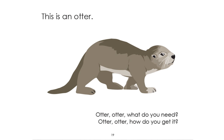This is an otter. What does the otter need to live and grow and how does it get it? Students respond: it needs air, the otter needs food. Let's go on to the next page and look a little bit deeper.